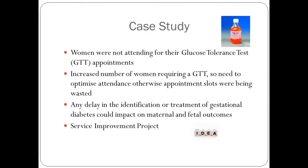Locally it was noted that women were not attending for their glucose tolerance test appointments in the maternity unit once they had been arranged by their midwives. There was also an increasing number of women waiting for appointments, which led to conflict and difficulty in allocating appointments, whilst other appointments were actually being wasted. Any delay in the identification or treatment of gestational diabetes could impact on both maternal and fetal outcomes, and this helped to identify an idea for a service improvement project.